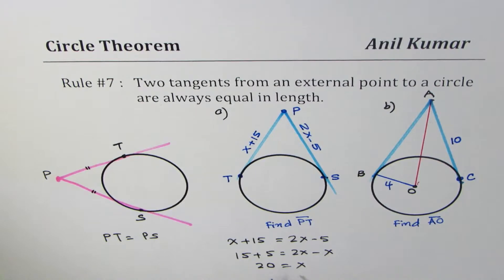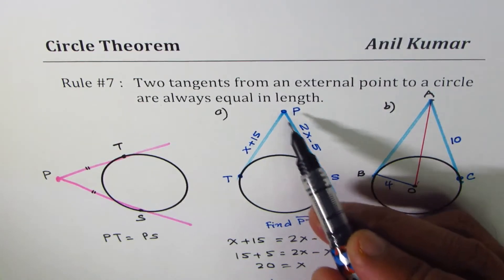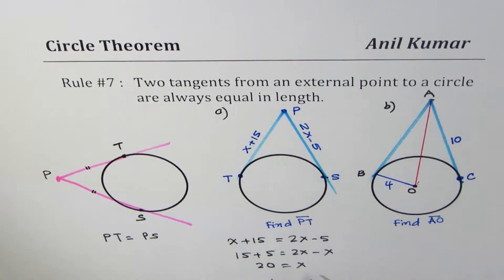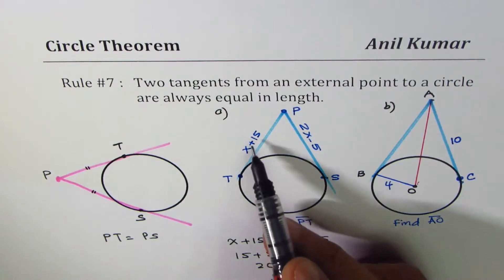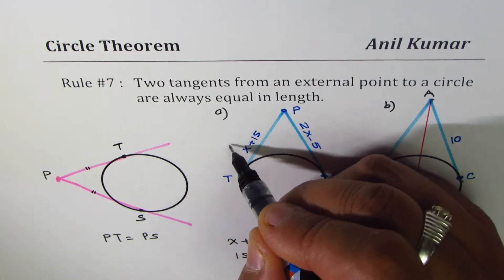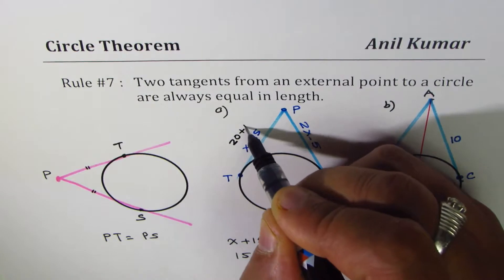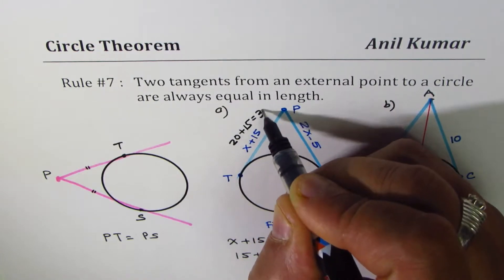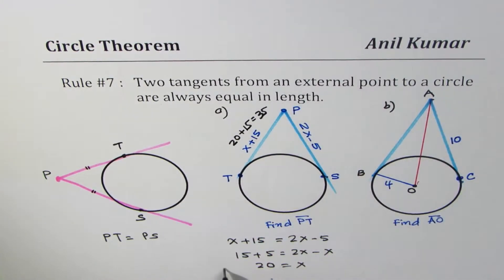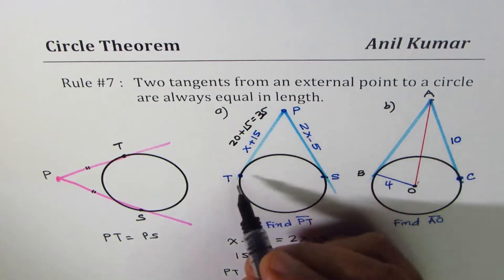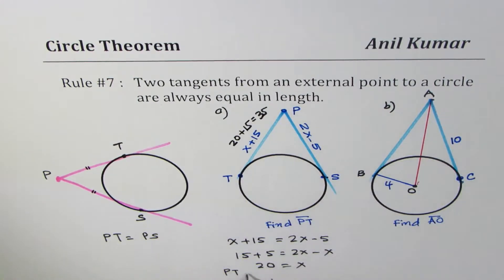Now, if x is 20, what is PT? So let's substitute 20. Then we get 20 plus 15, and that is 35. So we can say PT, the length of tangent from the point P, is equal to 20 plus 15, which is 35. So that is how we can solve such questions.